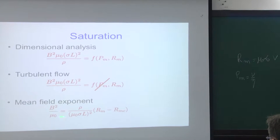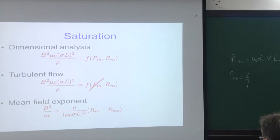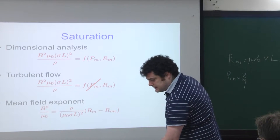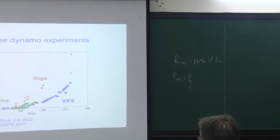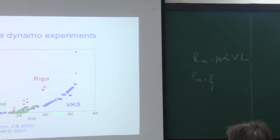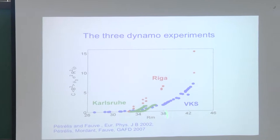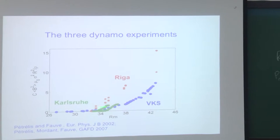If we assume the usual dependence for supercritical bifurcation — B proportional to the square root of departure from onset — then B² equals Rm minus Rmc. This law can be tested for different experimental dynamos. In red we have data from the Riga experiment, in blue from Karlsruhe, and in green from VKS. This dimensionless form for the magnetic energy is indeed a function of Rm. Importantly, the magnetic energy formed above onset is of the same order of magnitude for all three dynamos, confirming that the magnetic energy is independent of kinematic viscosity.